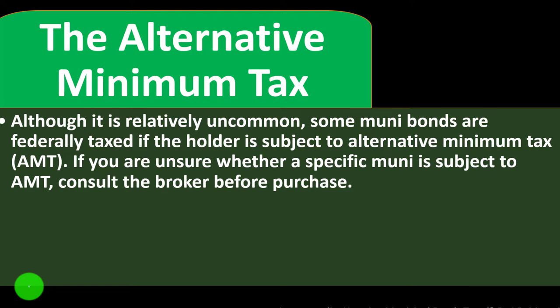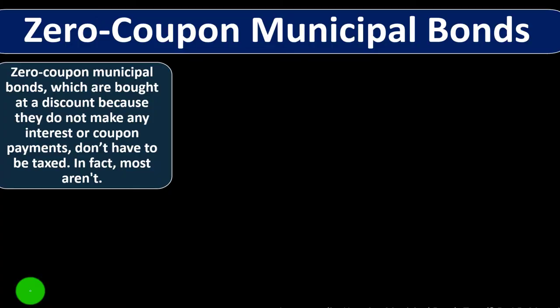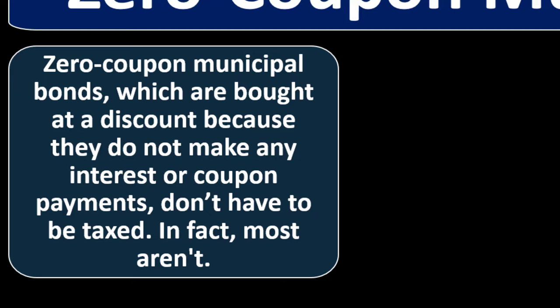The alternative minimum tax (AMT): although relatively uncommon, some muni bonds are federally taxed if the holder is subject to the AMT — typically a type of tax applicable to higher-income individuals. If you are unsure whether a specific muni is subject to AMT, consult the broker before purchase. For example, a bond used for a municipal improvement that is not backed by a state or municipality but rather by a corporation — such as an airline backing an airport improvement bond — would be subject to AMT.